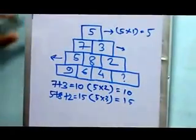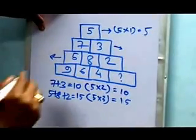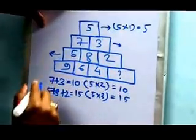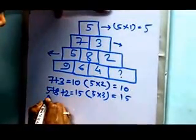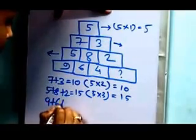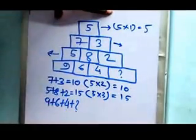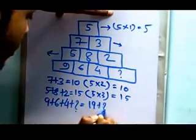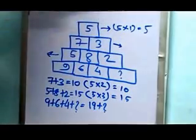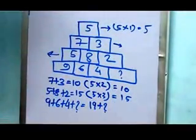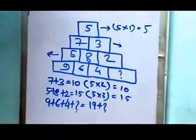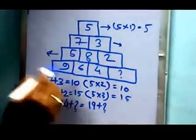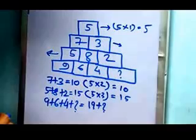In the last row, let's add all the numbers first. We get 9 plus 6 plus 4 plus question mark, which is 19 plus question mark.